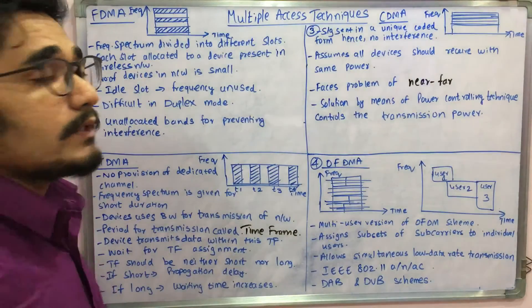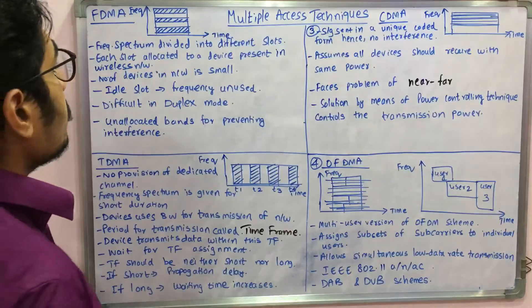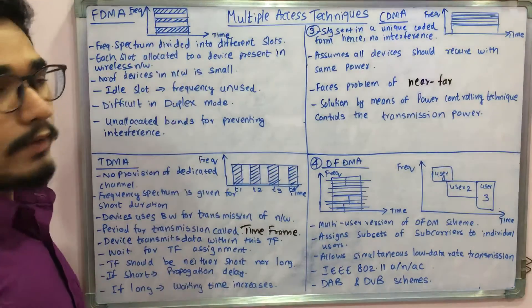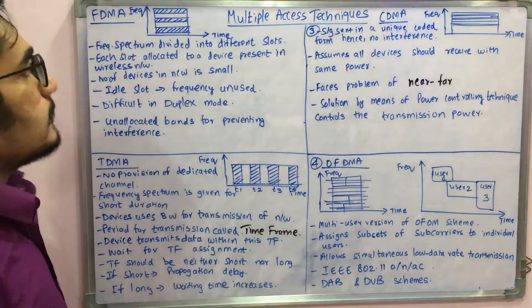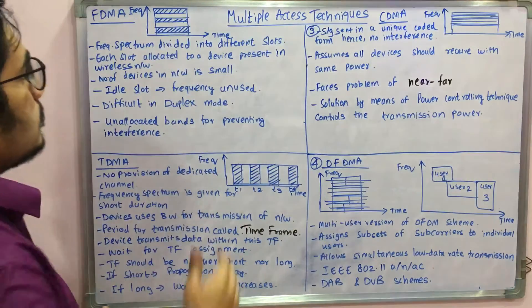First of all, we start with frequency division multiple access, short named as FDMA. In this, on the x-axis you have time and on the y-axis you have frequency. A frequency band is considered and divided into different time slots.